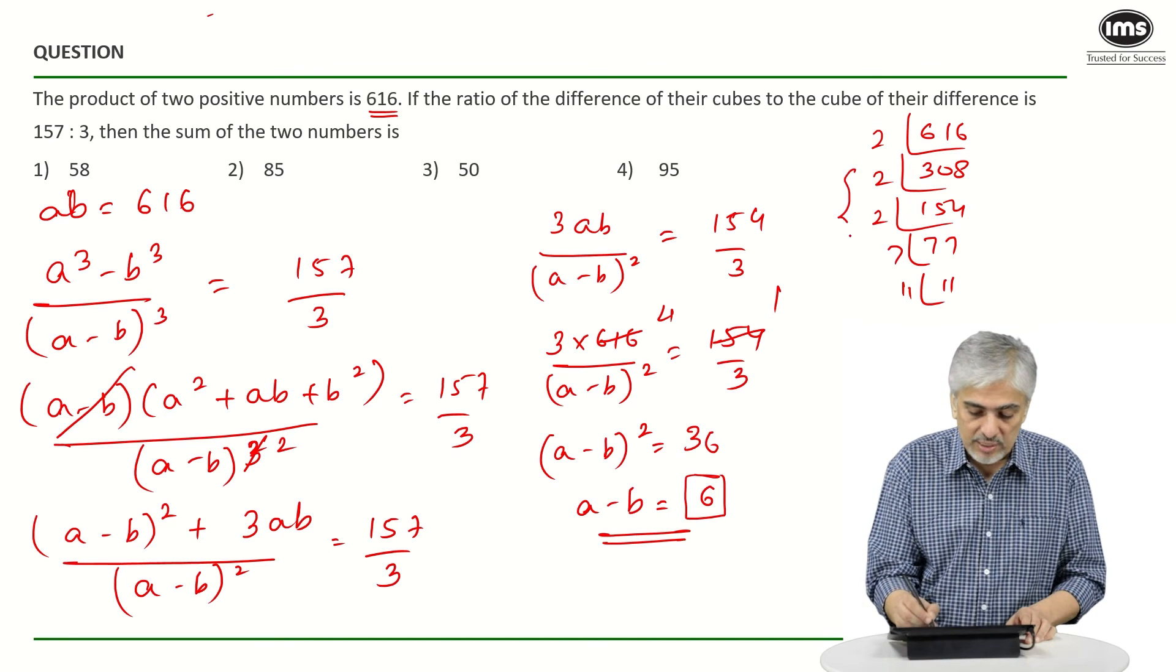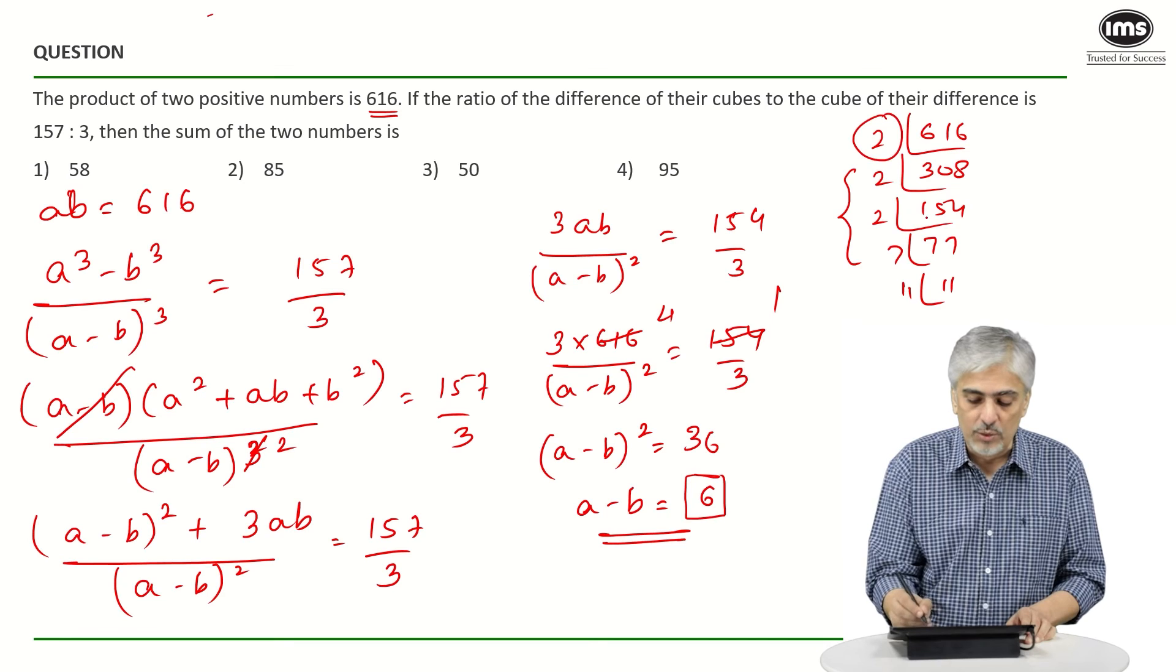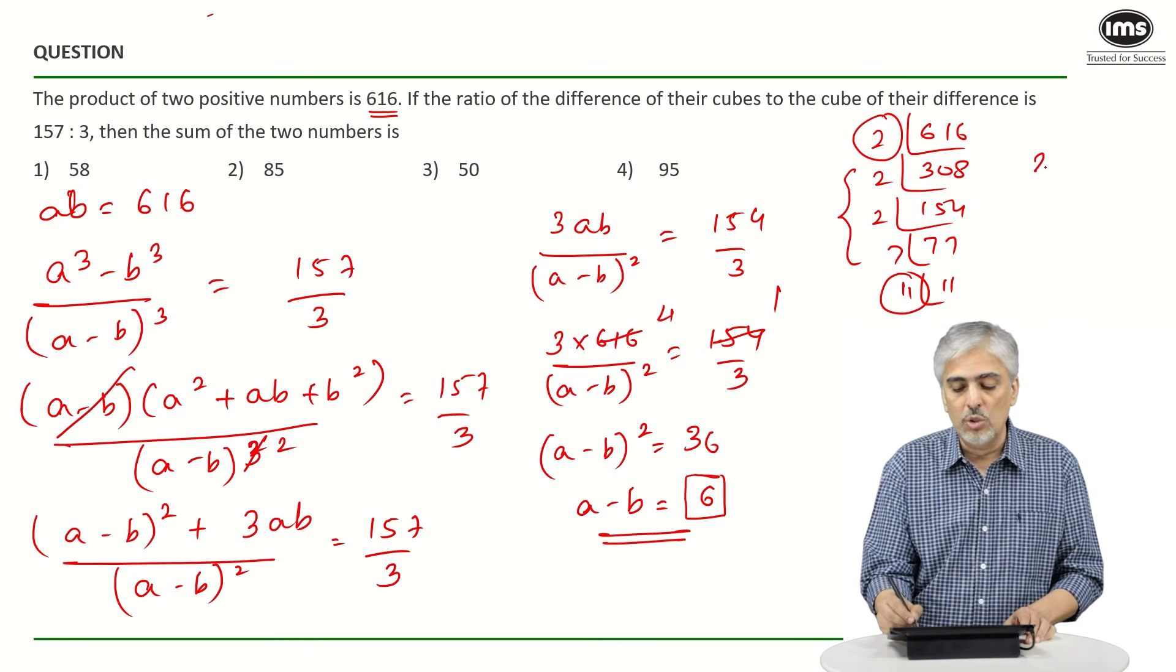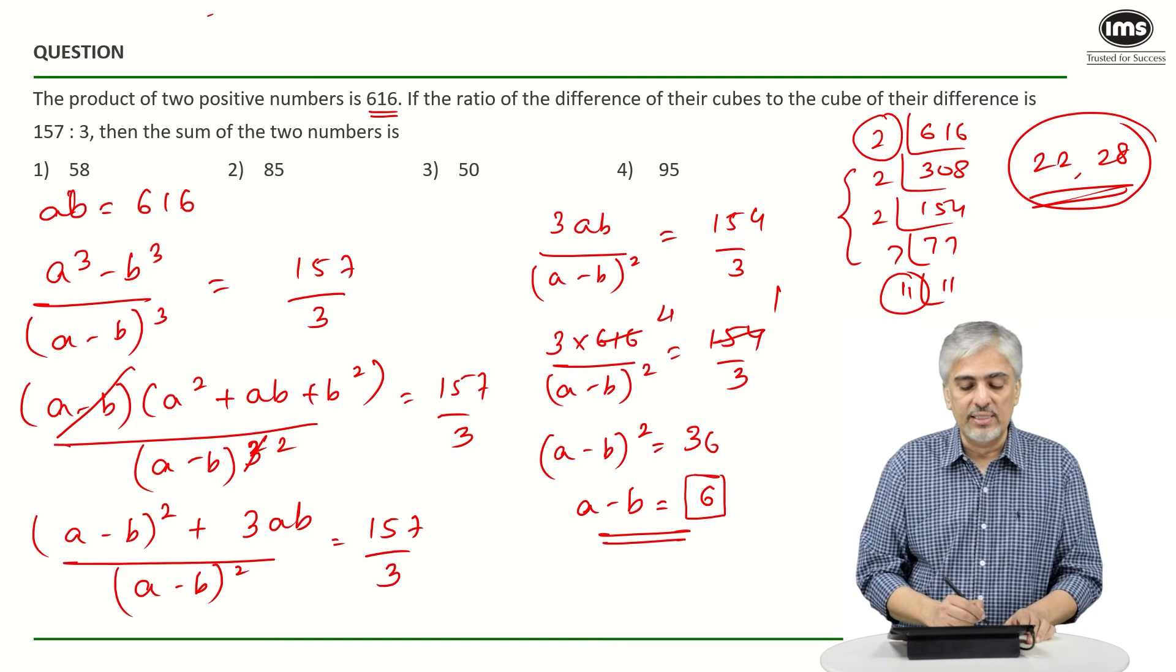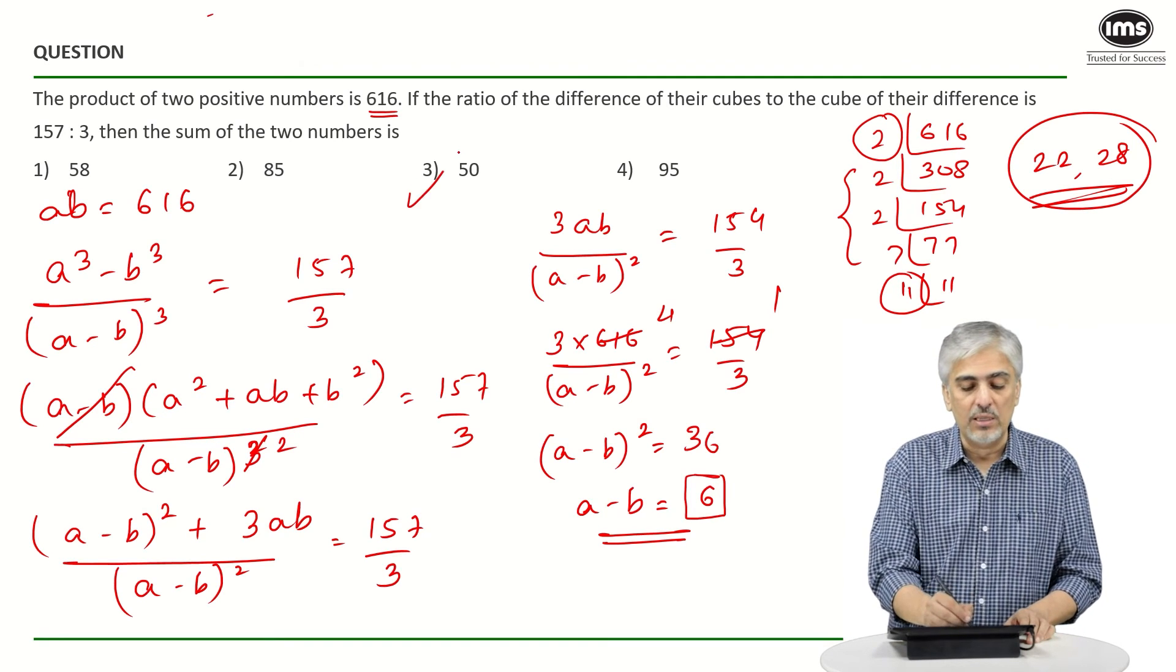So products I'm already going to get it for you. 7 4s are 28 and 11 2s are 22. 22 and 28 are your two numbers which we are looking for. So the sum will be 50 which is my third option.